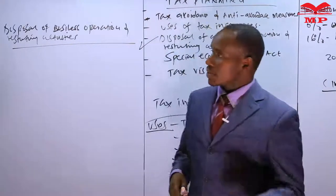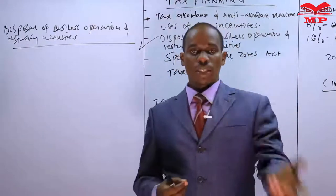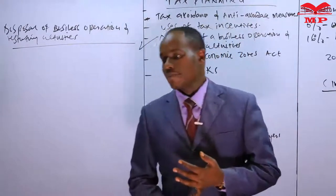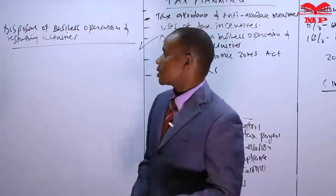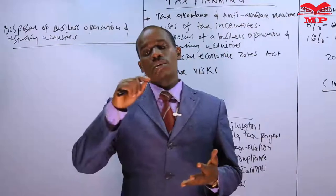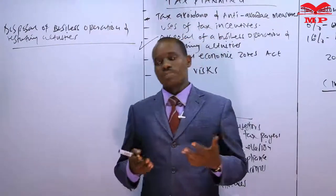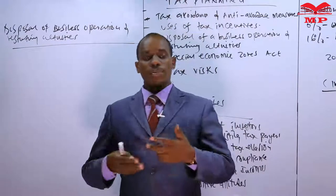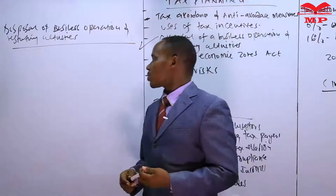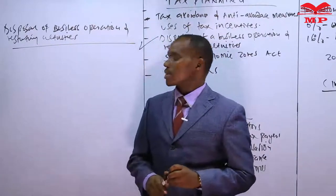For KRA to accept this, certain conditions must be met. Within 30 days, the seller needs to disclose the details of those particular transactions to KRA. You also need to inform the Commissioner how overdue taxes are supposed to be paid, because the business may not have paid all its taxes on time, so the Commissioner needs to know how that outstanding tax will be settled.